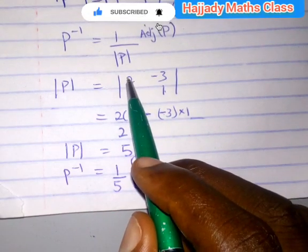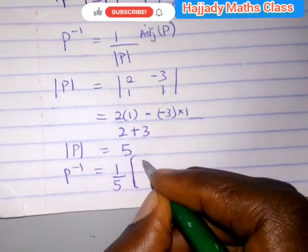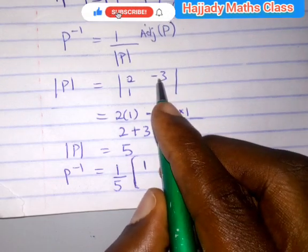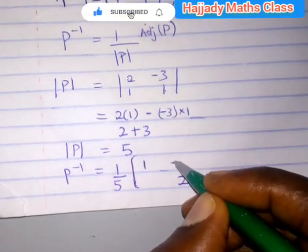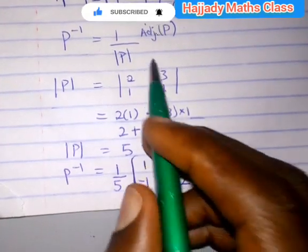That is, here you have 1, we have 2, here we have minus 3 was there initially, change it to plus 3, and here we have minus 1. So that means you change the position of this while you change the sign of this. That is the shortcut for you to get it.